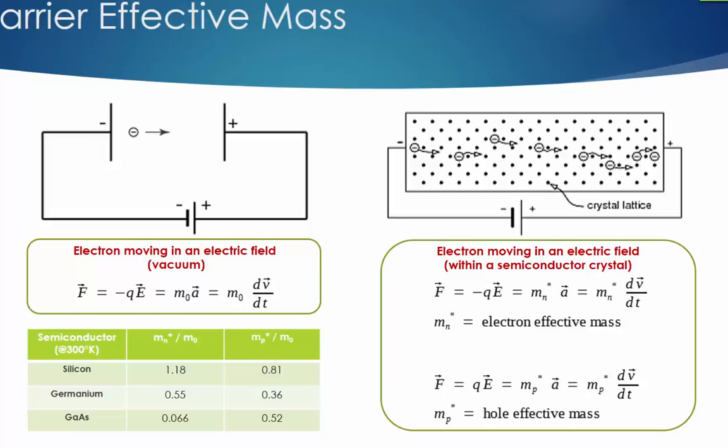Then how do we describe the electron's motion inside a crystal? It turns out that this can only be solved by quantum mechanics. However, when we examine the electron's motion between collisions, the complex quantum mechanical formula is simplified and looks identical to F equals MA. But the M here is the electron's effective mass, represented by MN asterisk.